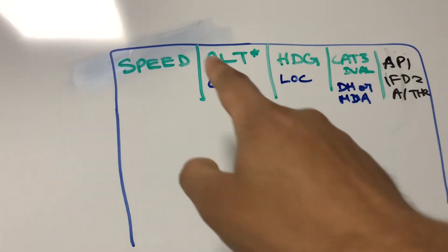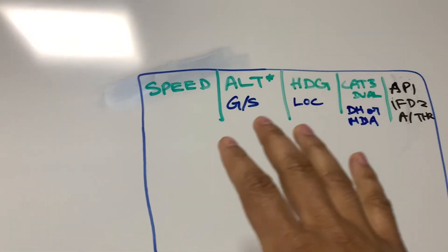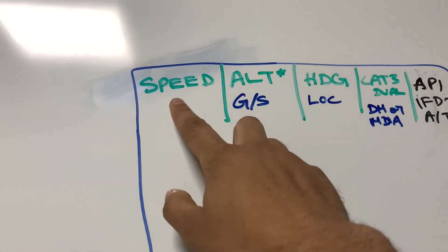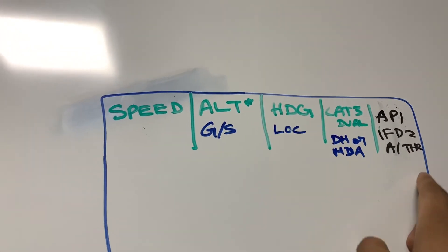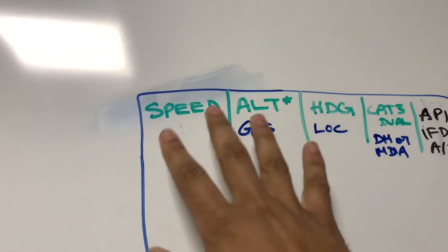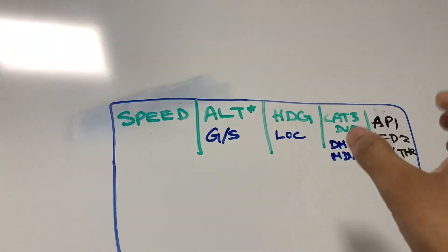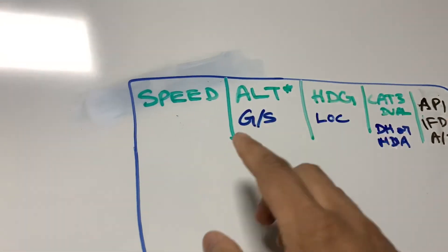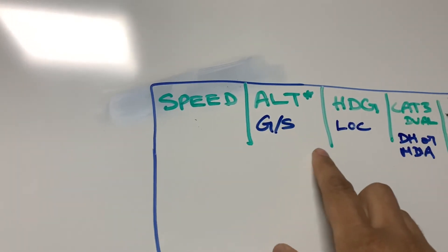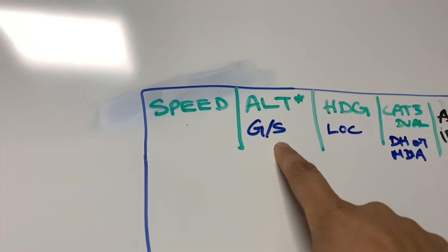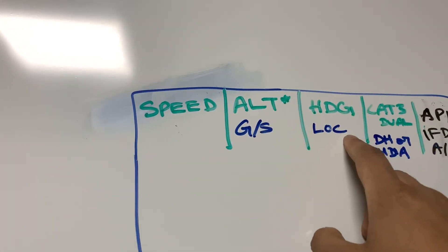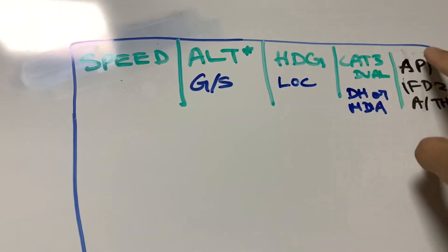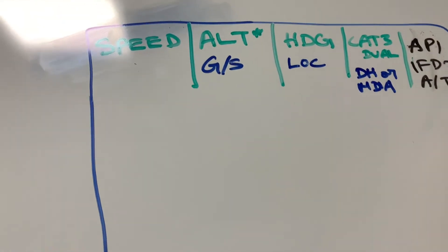So friends, this is the PFD — you can see it from the near view. This is the first column, second column, third, fourth, and fifth. Here I've shown you what all FMAs can be there — just examples. First column: Speed. Second column: vertical modes. Third column: lateral modes. Fourth column: approach capabilities. Fifth column: engagement status of all three.